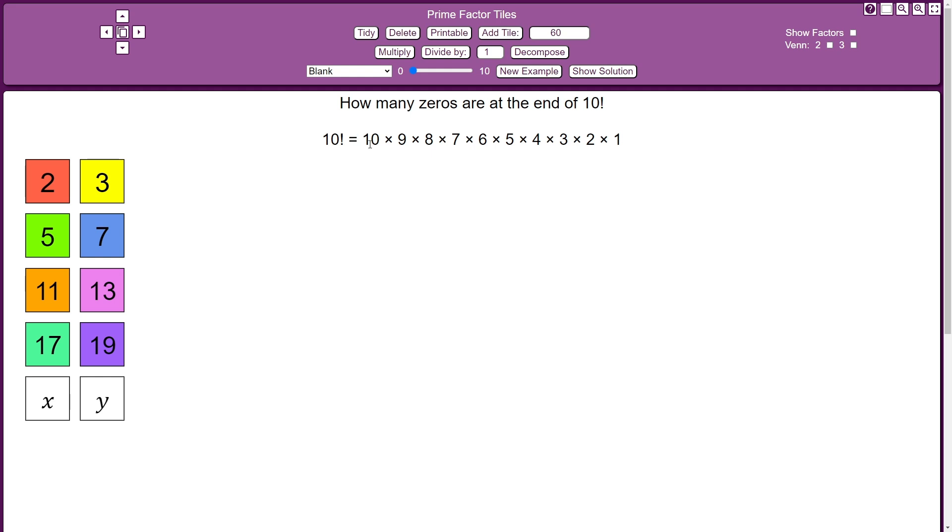it's this huge product here. It's 10 times 9 times 8 and so on, all the way down to times 1, which is a massive number, but I want to know how many zeros are at the end of it.